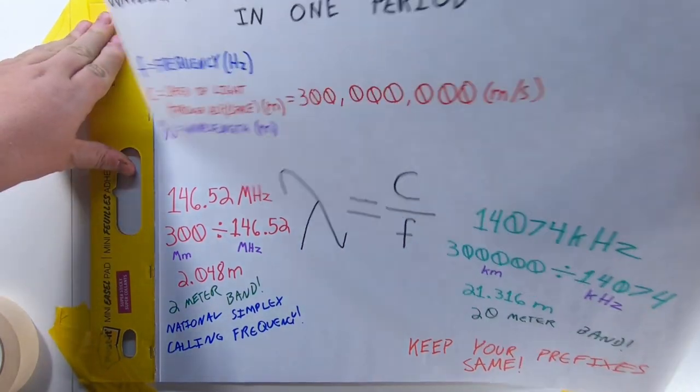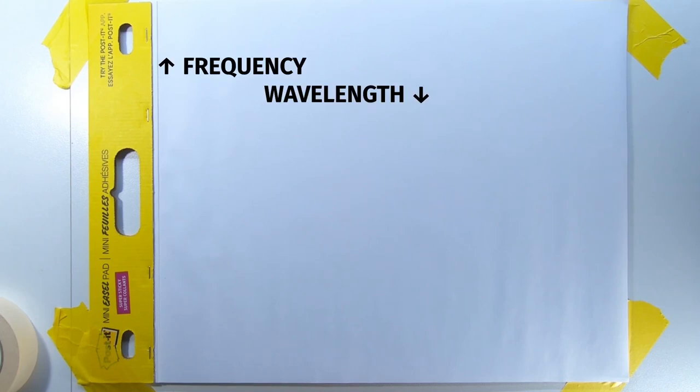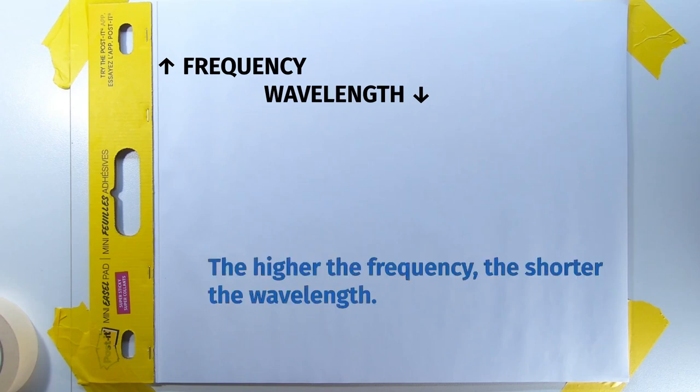So the relationship, which I didn't make clear on drawing this, is as frequency goes up, wavelength goes down. Or in other words, the higher the frequency, the shorter the wave.